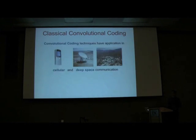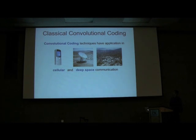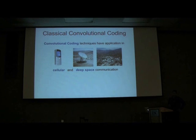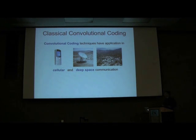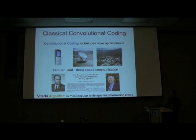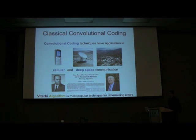We're going to talk about classical convolutional codes and why you would want to use them. This technique is very popular in cell phones and wireless communications. A group at JPL is also very famous for using this technique for communication with satellites. We'd like to take this and apply it to the quantum domain. The most popular technique for decoding convolutional codes came from another USC homeboy, Viterbi, who gave our school the Viterbi School of Engineering.